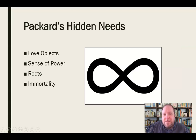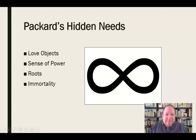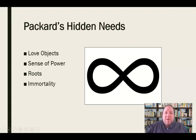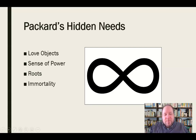The eighth hidden need is the sense of immortality — we don't really believe we're going to die. We know at some level we will, but we feel like our legacy is going to live on, that our name will live on. We have this sense of immortality we're reaching for. If we can persuade people that we have some avenue for that, then that's another hidden need we can tap into. These are the ways we can tap into people's needs — through either Maslow's hierarchy or Packard's eight hidden needs — to reach an audience psychologically.